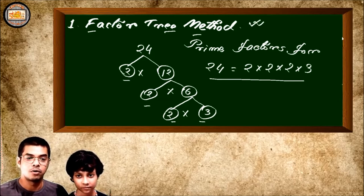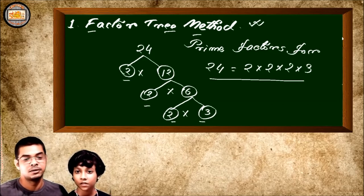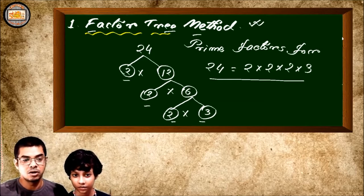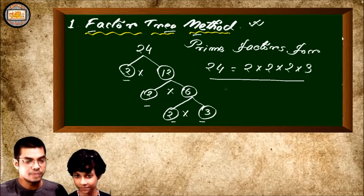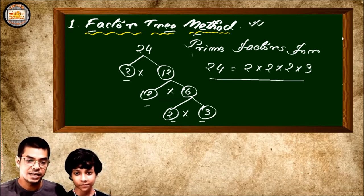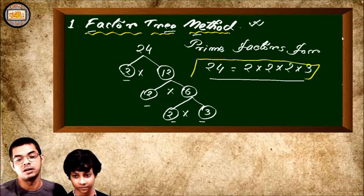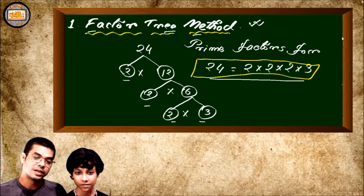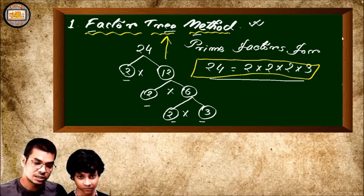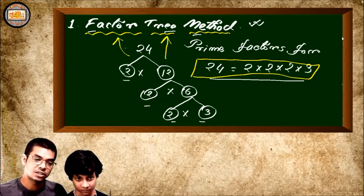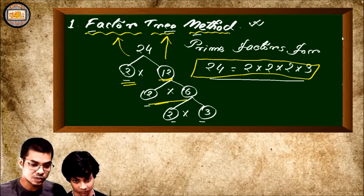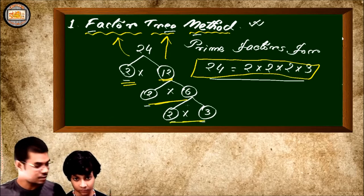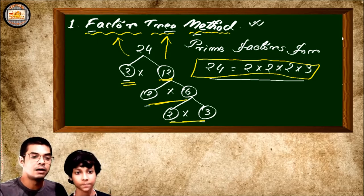Don't forget to write down the answer after you complete the factorization. The prime factorization of 24 is 2 into 2 into 2 into 3. It looks like a tree: 24 splits into 2 and 12, 12 into 2 and 6, and 6 into 2 and 3. That's why it's called the factor tree method.